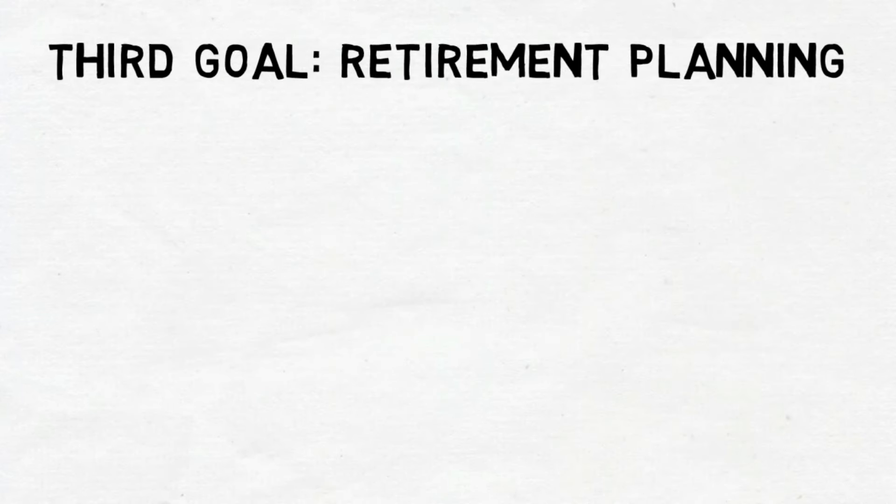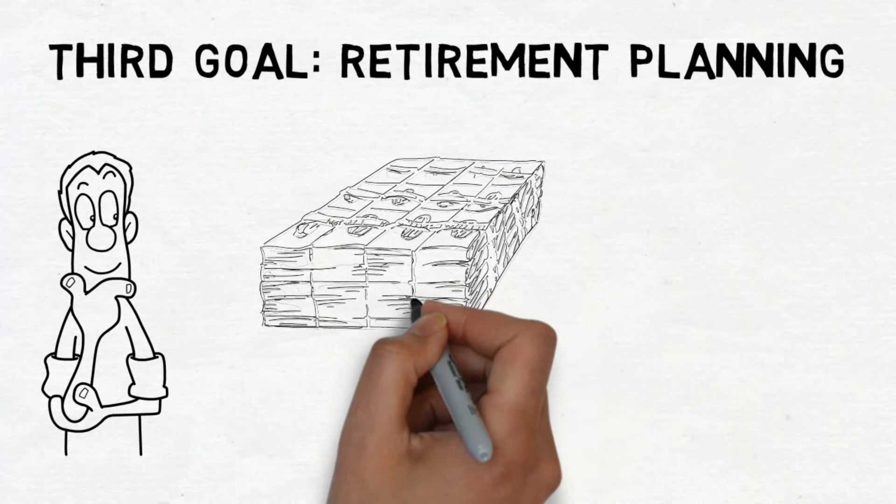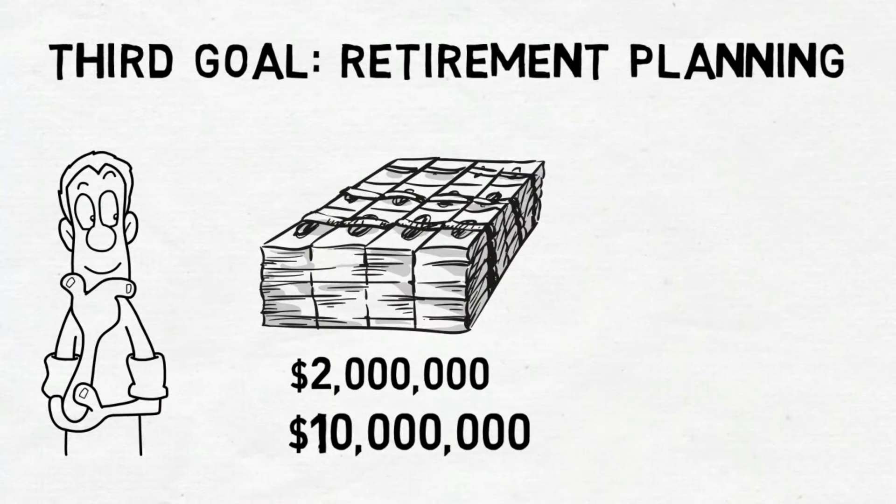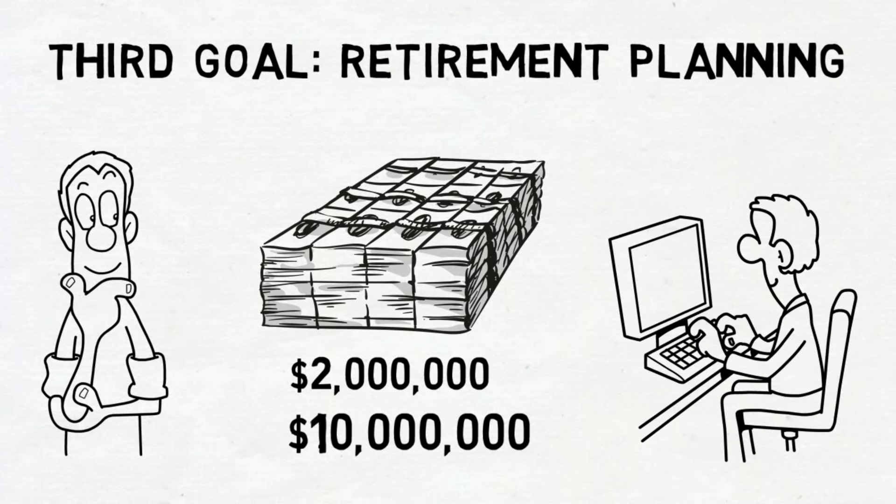As for the third goal, focus on retirement planning. Define a specific savings target you aim to achieve by the age of 60, whether it's $2 million or $10 million. This is something you'll keep working on and paying attention to over time.